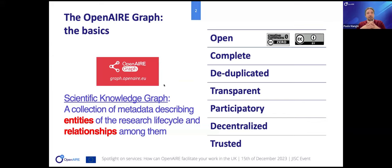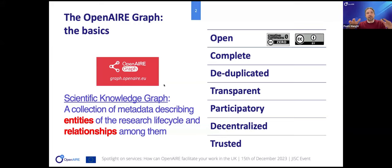We want our consumers to know the data provenance so they can knowledgeably reuse the data. It's participatory — one of the reasons for the community calls — in that we want communities to take on board the graph, care about it, tell us where we're wrong, and contribute with research results. We also want it to be decentralized, meaning data we collect should be returned to the original sources. And we want it to be trusted.